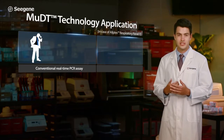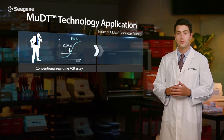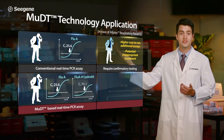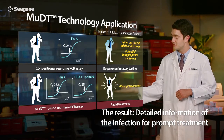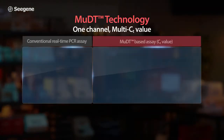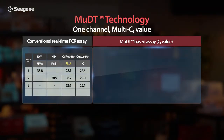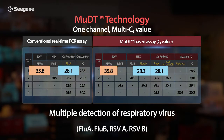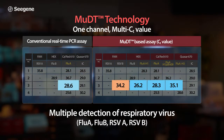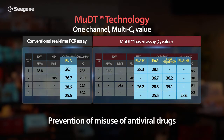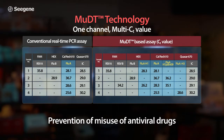MUDT is applied in Cgene's Allplex Respiratory Panel 1. This panel can detect Flu A and its subtypes simultaneously with CT values. Furthermore, Cgene's MUDT-based Allplex Respiratory Panel 1 provides infection information on other concomitant respiratory virus infections, giving a clear understanding of the complete disease state. This information supports faster and better patient care.